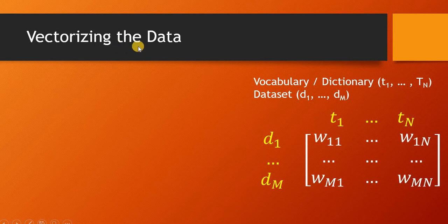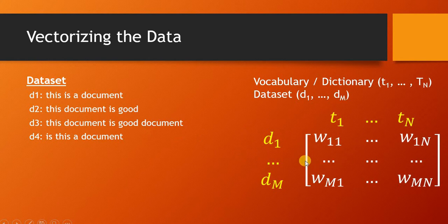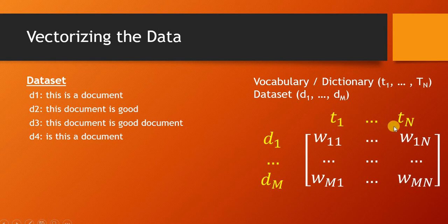This process is called vectorizing the data. If you are given a dataset, the target would be to convert it into a format where we have documents from d1 to dM and unique set of features from t1 to tN. The unique set of features is also called vocabulary or dictionary.